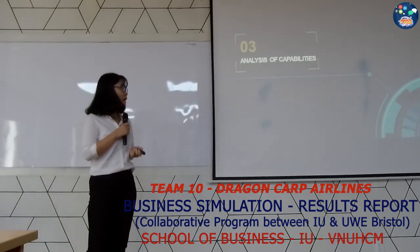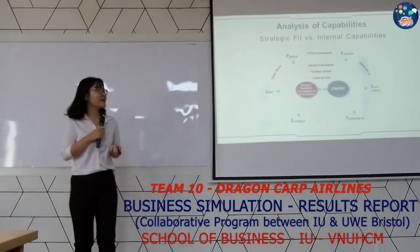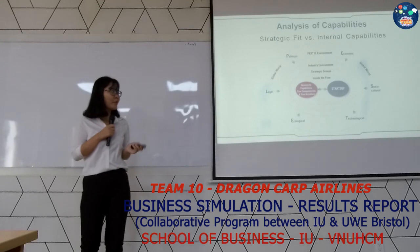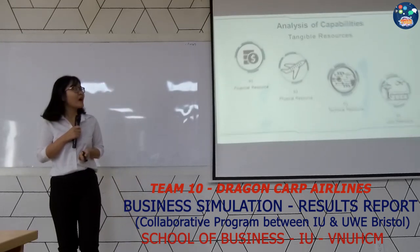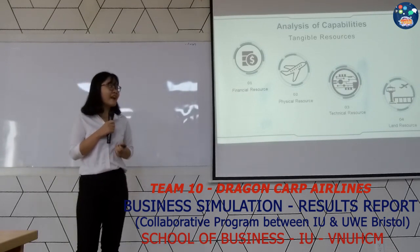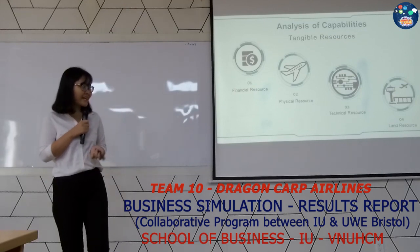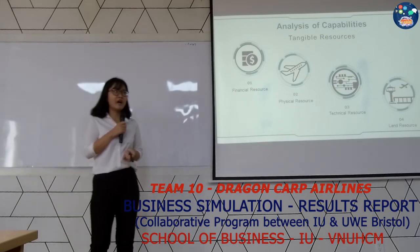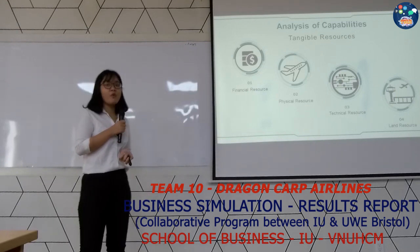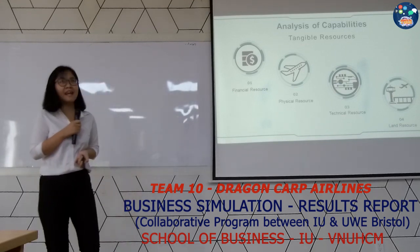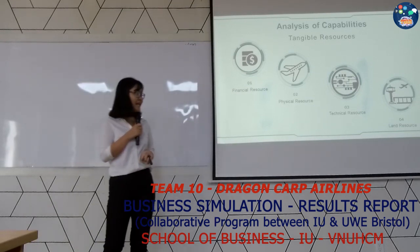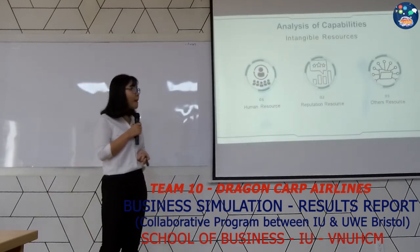I will continue with our company capabilities. The core competencies and capabilities are related to our strategies and will influence our success. We have two main kinds of resources: tangible and intangible. In DragonCap Airlines, tangible resources include financial, physical, technical, and land. In finance, we have $22,000 in shares and stock. In physical, we have three available aircraft from 1990. We also lease one aircraft, Euro 31. In technical, we have ground equipment, and in land, we have an official building.